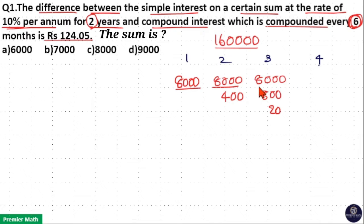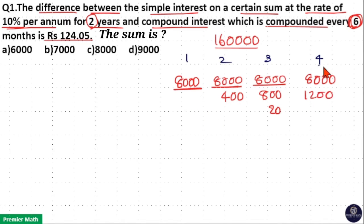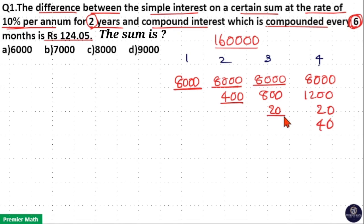For the fourth term, 5% of 1,60,000 — that is 8,000 — is added. Then 5% of 8,000 three times gives 400 plus 400 plus 400, so 1,200 is added. Additionally, 5% of 400 is 20, and 5% of 800 gives 40, each added for the fourth term. Finally, 5% of 20 — that is 1/20 of 20 — equals 1 rupee, added in the fourth term.